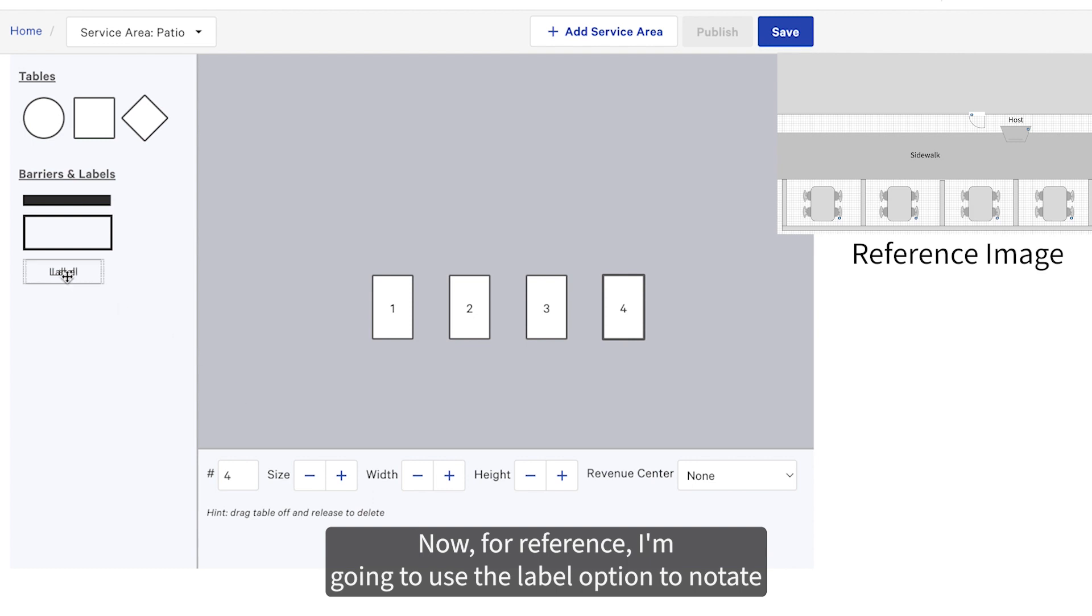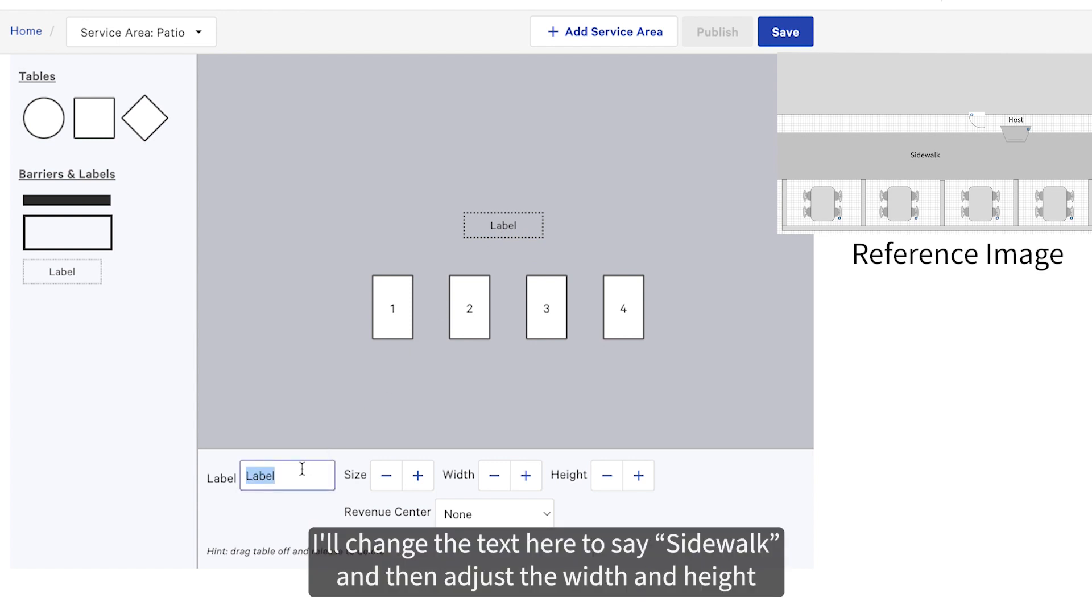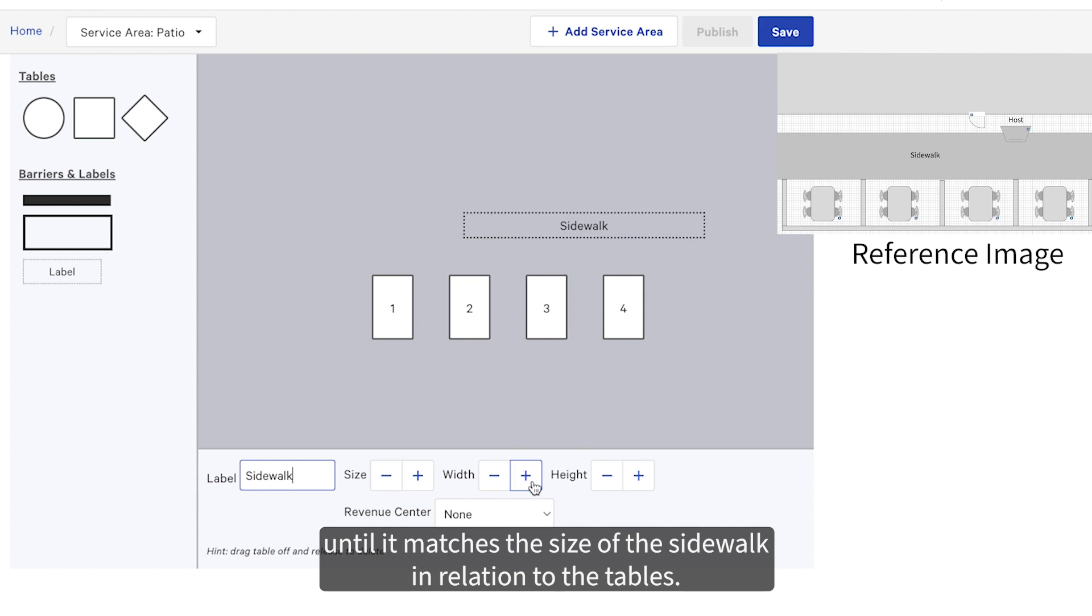Now for reference, I'm going to use the label option to notate where the sidewalk is. I'll change the text here to say sidewalk and then adjust the width and height until it matches the size of the sidewalk in relation to the tables.